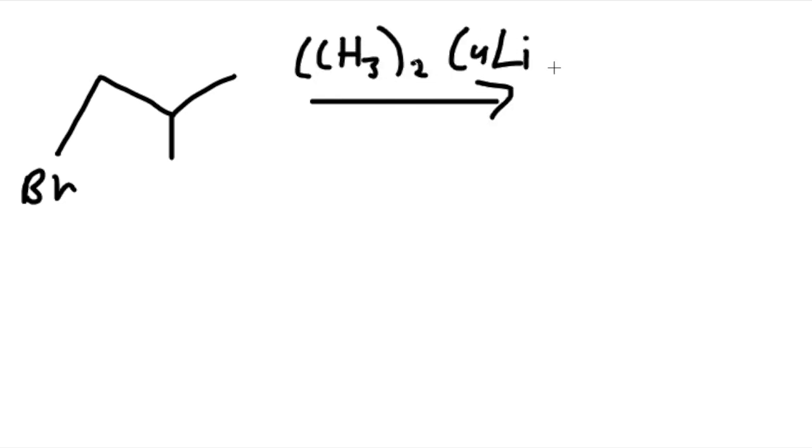Let's do another example here. We have the structure of bromine, and let's add the methyl. All we do is remove the bromine and add the methyl in here, like this. That's all we do.